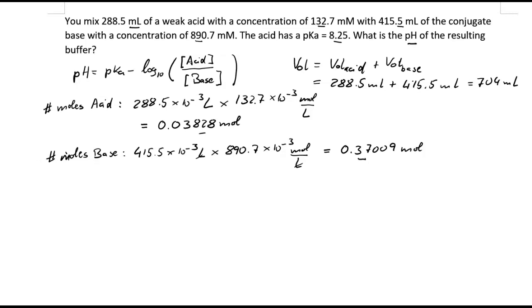We can already see we have far more base than we have acid, and therefore we can already predict that our pH must be larger than the pKa, because we've got more base than we have acid, and that makes the pH go up.